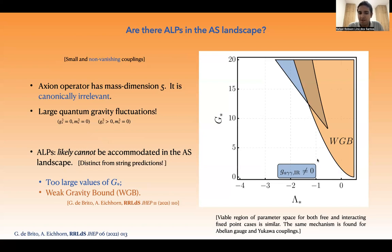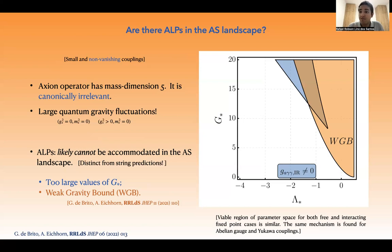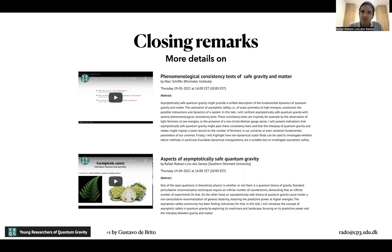They should be small. Another related problem is the weak gravity bound that we developed in another work, which is related to the fact that large gravity fluctuations would spoil properties in the matter sector. That's why I conclude that our landscape would not contain ALPs, at least for this very first model — which is a very distinct prediction when compared to string theory, where axions naturally emerge. So it is very interesting that you can distinguish between these two theories of quantum gravity. Thank you very much, and I will be happy to receive questions about my work.